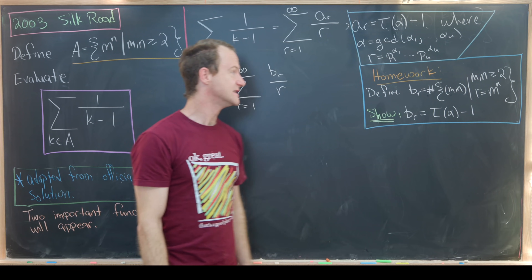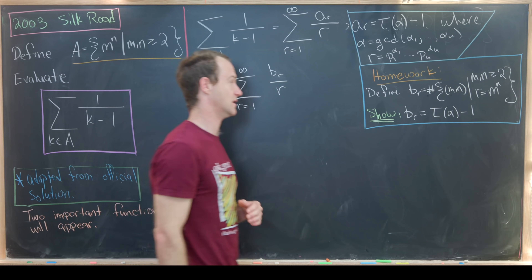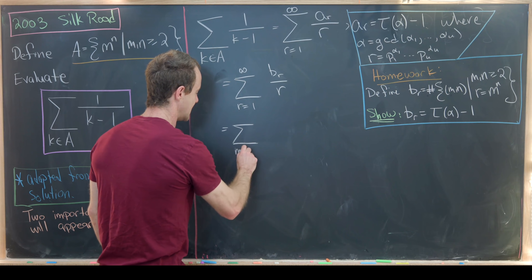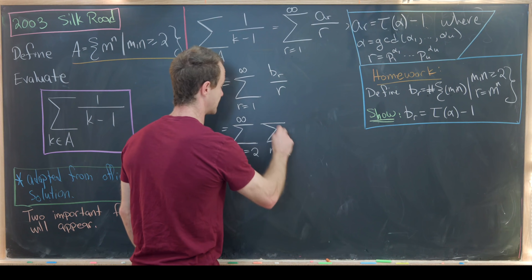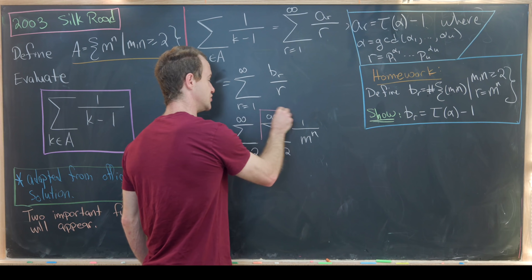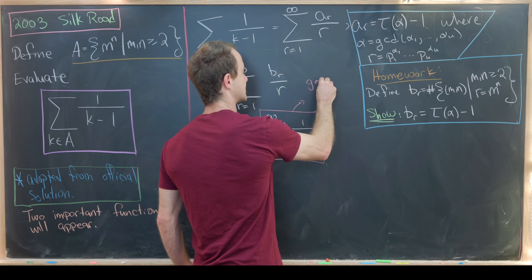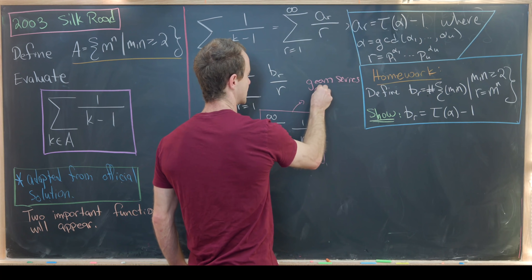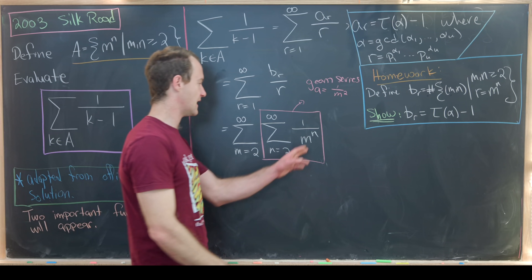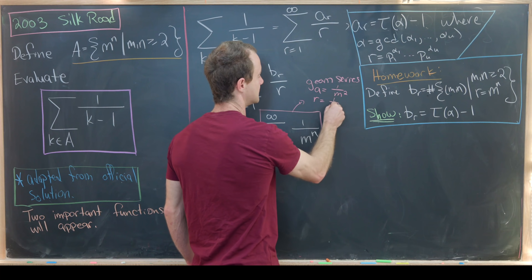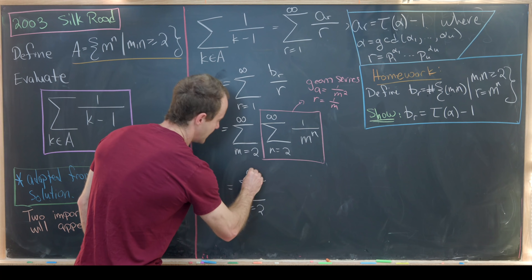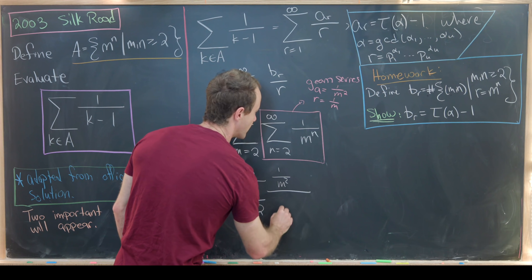By the way b_r is defined, it's easy to write this as a double sum involving indices m and n. We write it as the sum as m goes from 2 up to infinity, and the sum as n goes from 2 up to infinity of 1 over m to the n. Now we can notice that the inner sum is a geometric series. The starting term is 1 over m squared and the common ratio is 1 over m. That means we can sum it as 1 over m squared over 1 minus 1 over m.